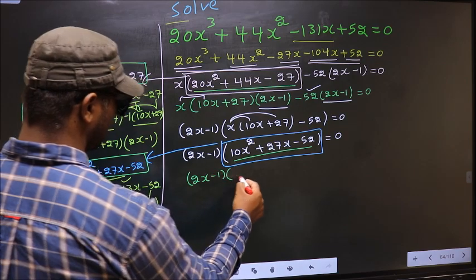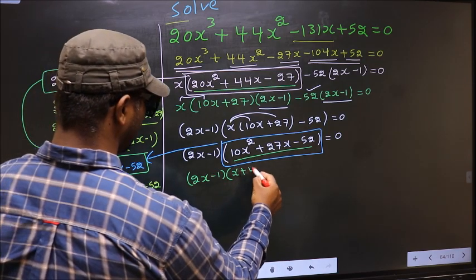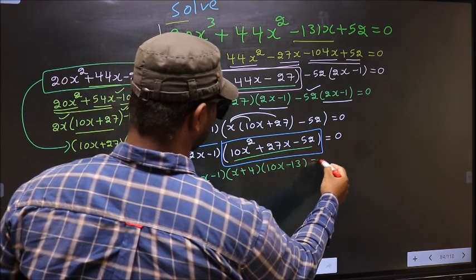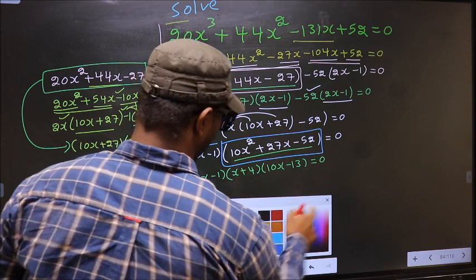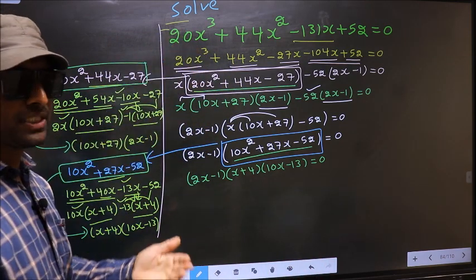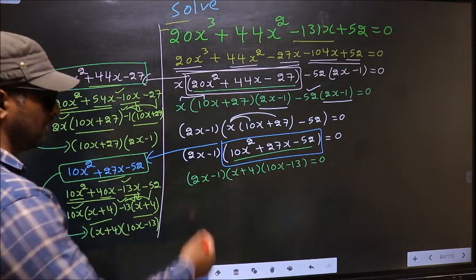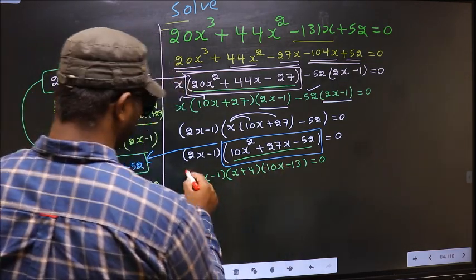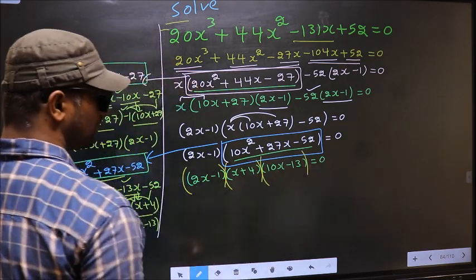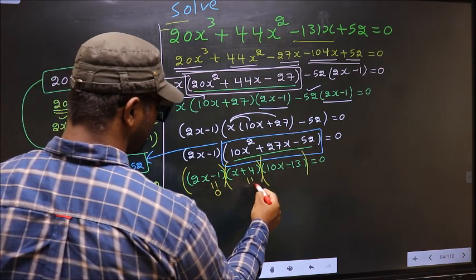In place of this quadratic, we write (x + 4)(10x - 13). So the equation changes to (2x - 1)(x + 4)(10x - 13) = 0. We got a product of brackets equal to 0, so we equate each bracket to 0 to get the x values.